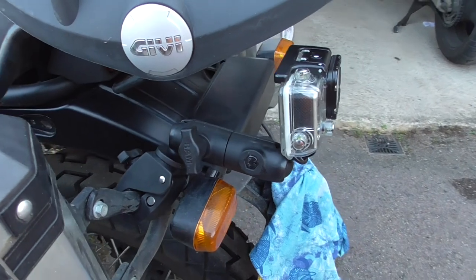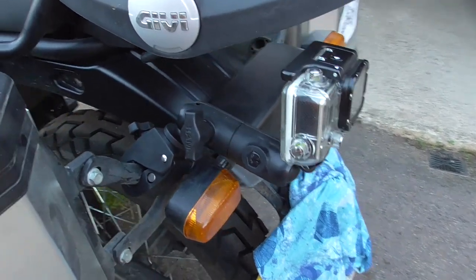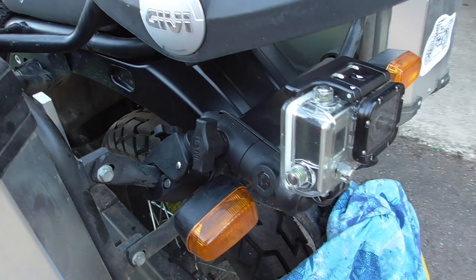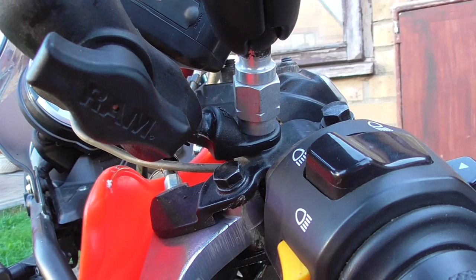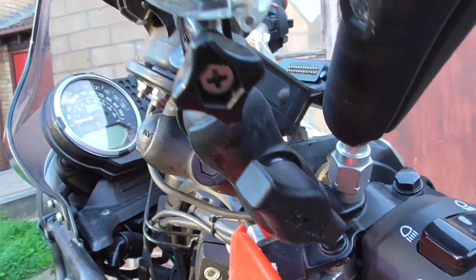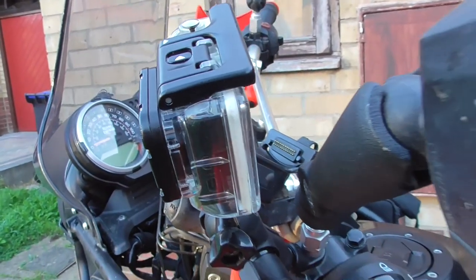And this is what the mounts look like on the bike. This is the rear of my Himalayan with a GoPro on it, via the articulating mount, the clamp, and one of the ball mounts. At the front end, we have the mirror stalk adapter, the short arm, and again, a ball mount for a GoPro camera.